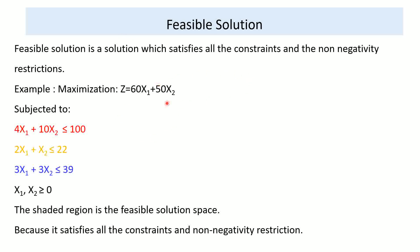Let me start with feasible solution. A feasible solution is a solution which satisfies all the constraints and the non-negativity restrictions. From this example, 4x1 plus 10x2 equals 100, 2x1 plus x2 equals 22, and 3x1 plus 3x2 equals 39 are our constraints. All decision variables x1 and x2 should be greater than or equal to 0. A solution which satisfies these constraints and non-negativity restrictions can be called a feasible solution.